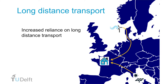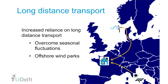Long-distance transport can also help to overcome seasonal fluctuations in renewable energy sources. In the winter, when there is less sun, it may be necessary to transport electricity from locations further away — perhaps as far as Africa — to ensure that electricity demand can be met. So as the amount of renewable energy in the energy mix increases, our energy system will become increasingly reliant on long-distance transport.